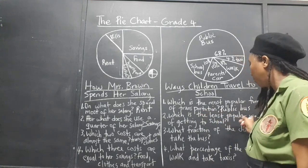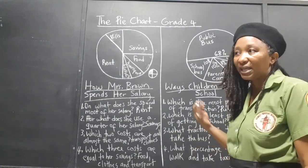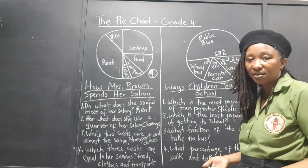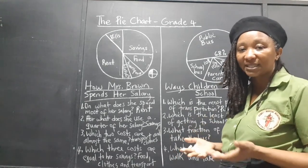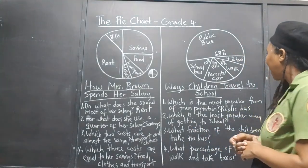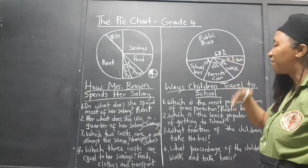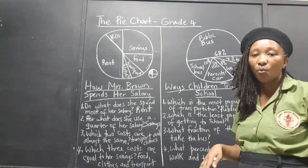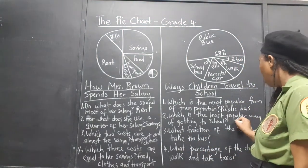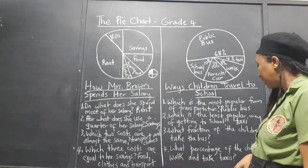Number two: which is the least popular way of getting to school? The least would be the one with the fewest students, and that would be the 4%. Only four children out of every 100 take the taxi.